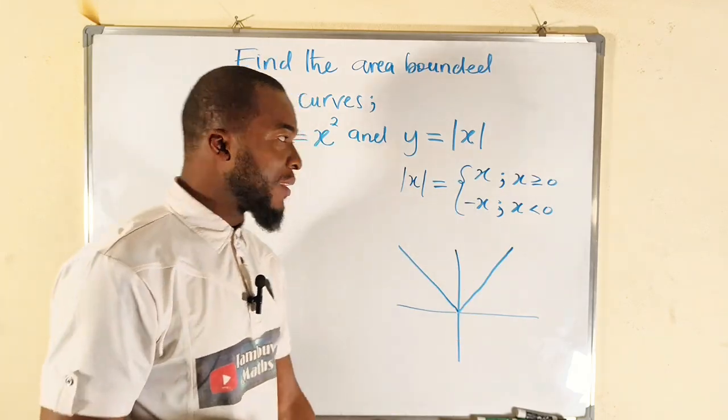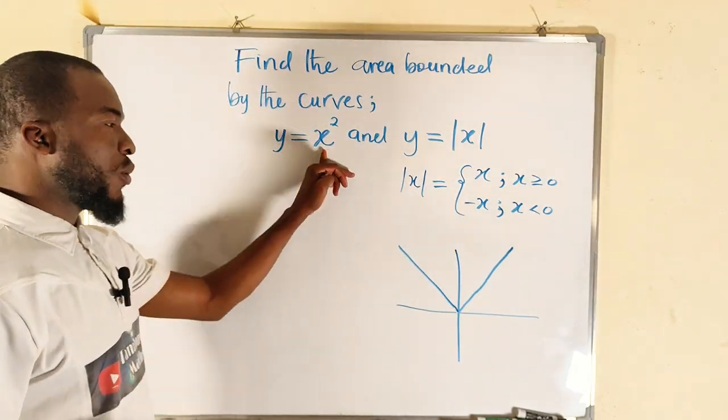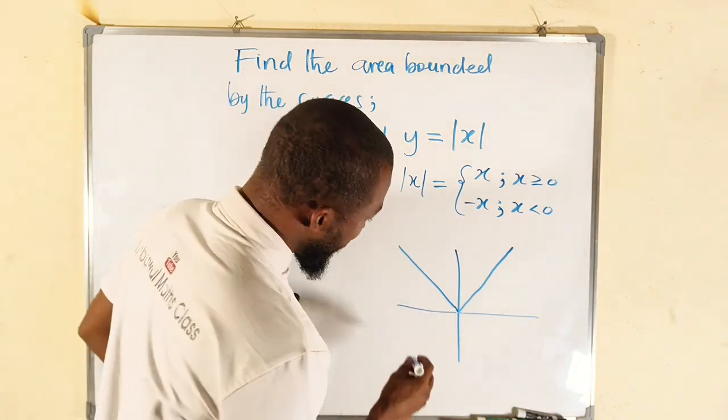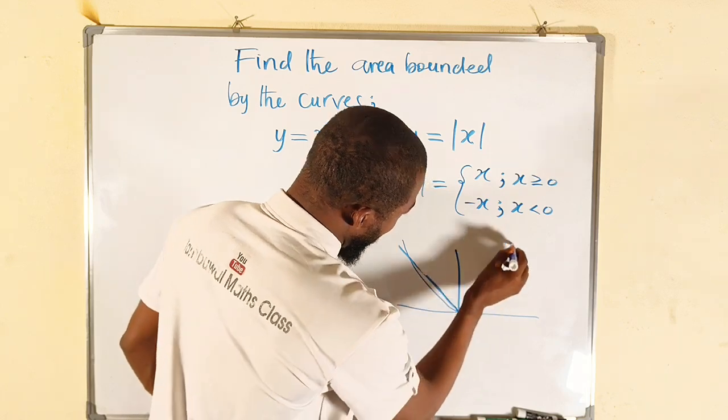So this is the graph of the absolute value of x. What about x squared? It is going to be a parabola that takes a turn at the origin, something like this.